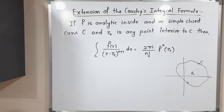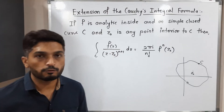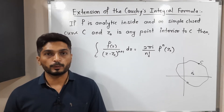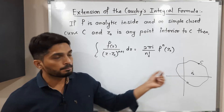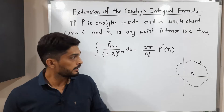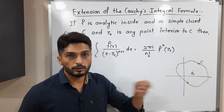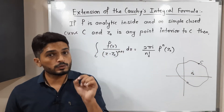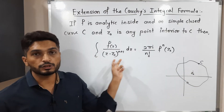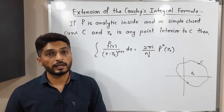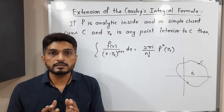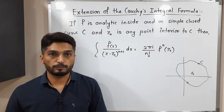Let us discuss the extension of Cauchy's integral formula. We have already seen Cauchy's integral formula, so let us discuss its extension. Here we have a simple closed curve C, a function f which is analytic inside and on the boundary of C, and one point z₀ which lies in the interior of C. Then the value of this integration is equal to 2πi upon n factorial times the nth derivative of f at z₀.